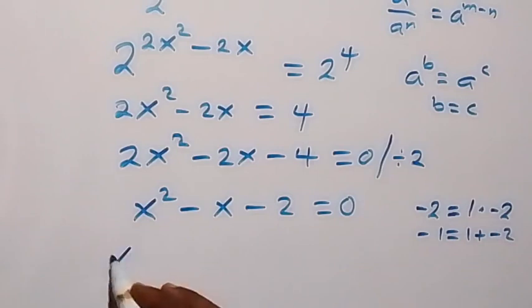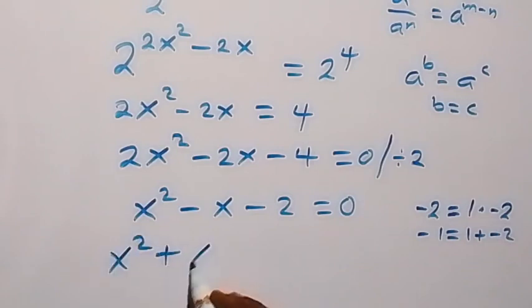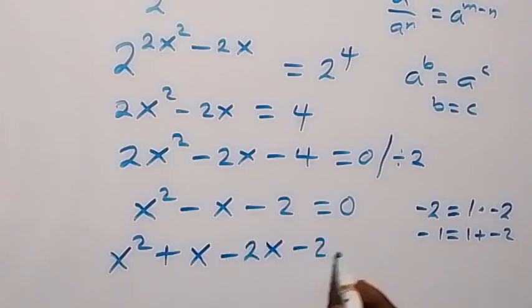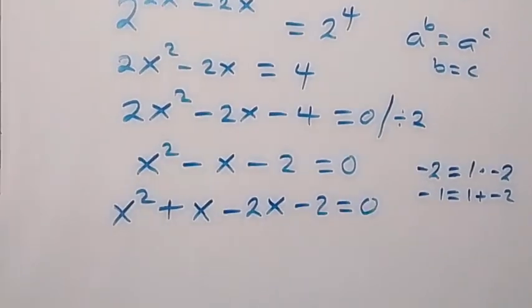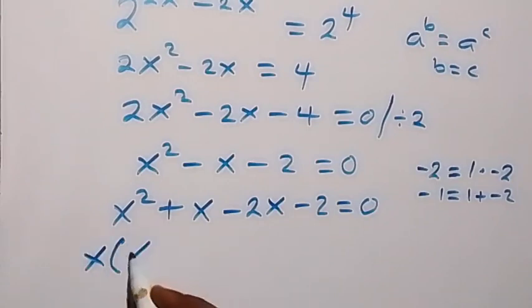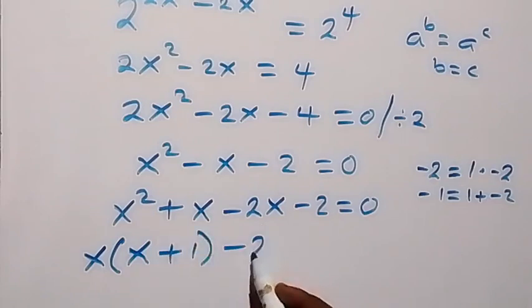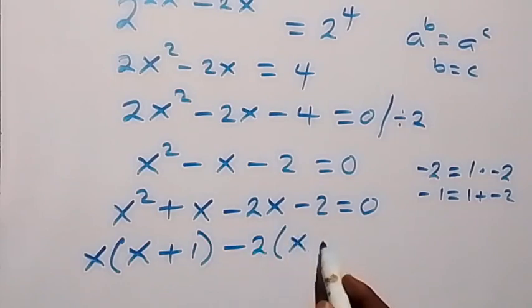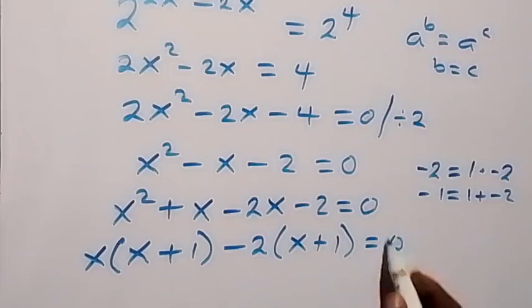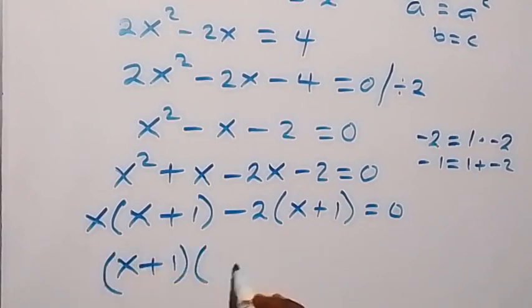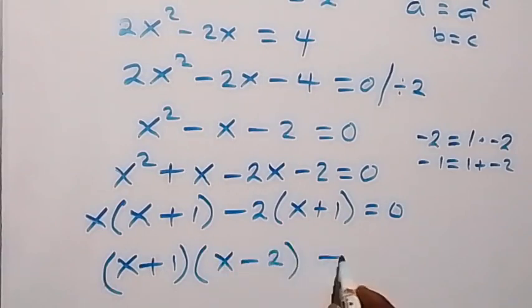So we rewrite as x squared plus x minus 2x minus 2 equals 0. Grouping: x is common in the first pair giving x(x plus 1), and negative 2 is common in the second pair giving minus 2(x plus 1). So we have (x plus 1)(x minus 2) equals 0.